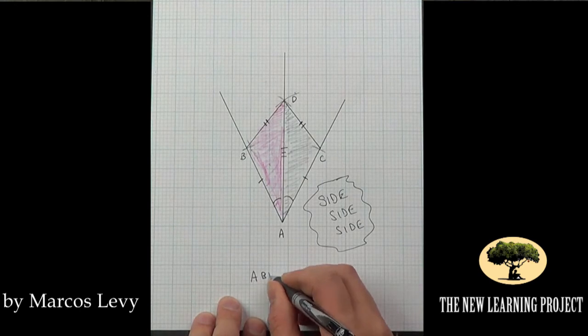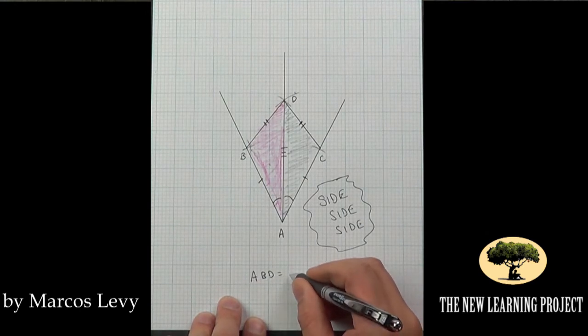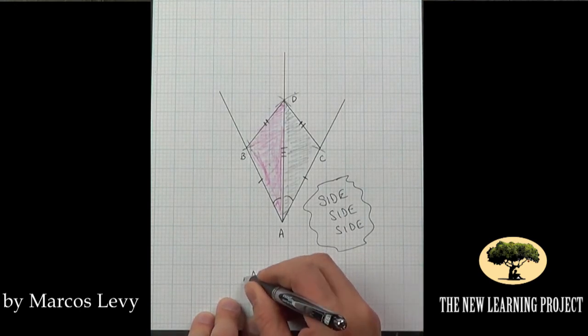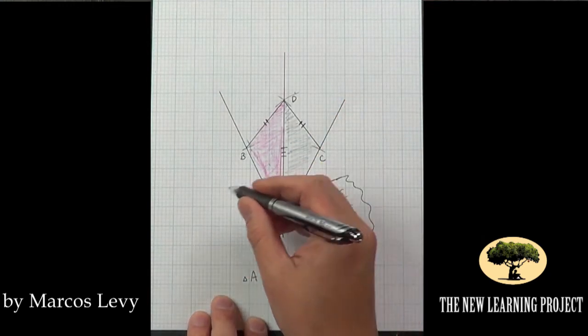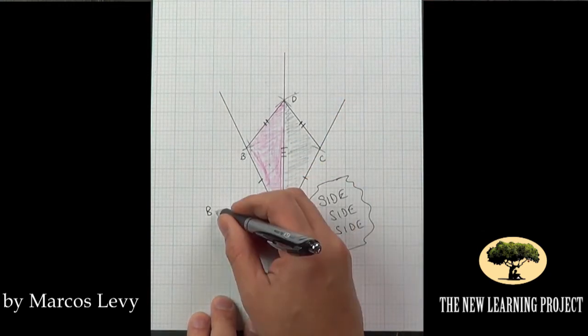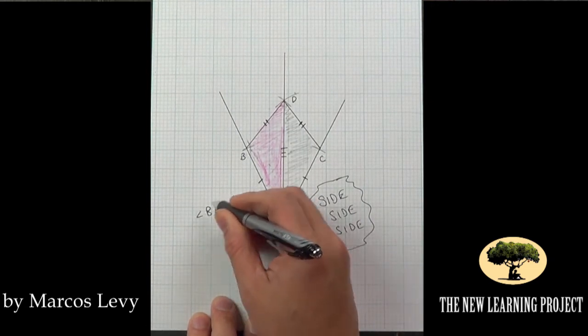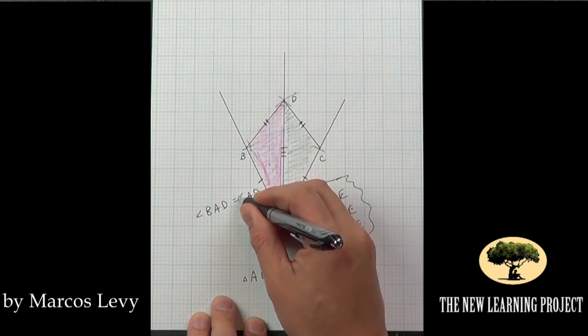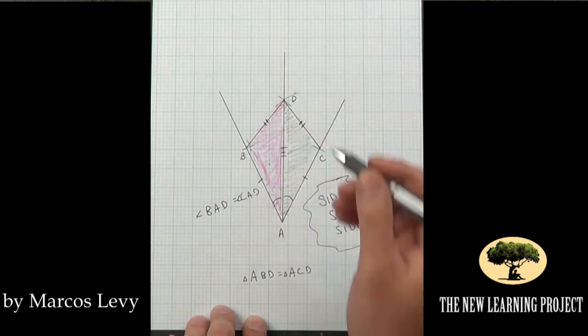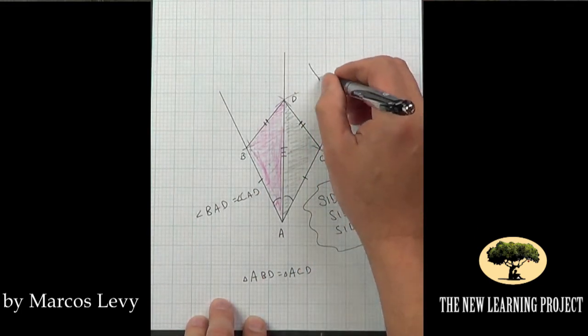And so we have triangle ABD is equal to triangle ACD, and if these two triangles are equal then their corresponding angles are equal, meaning that angle BAD is equal to angle CAD. And so AD really is the bisector.